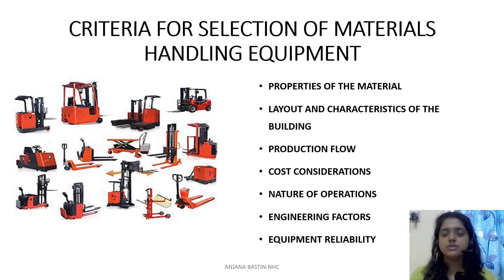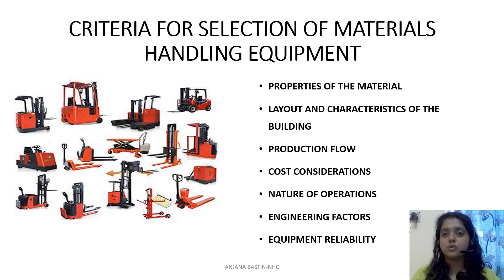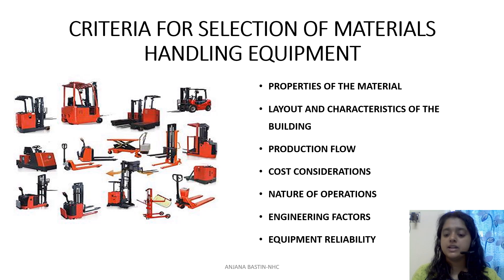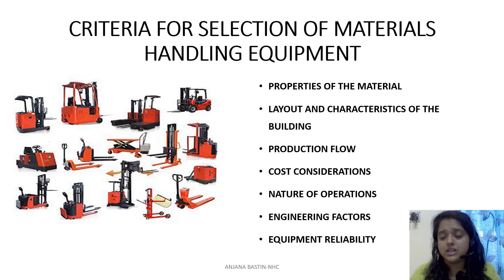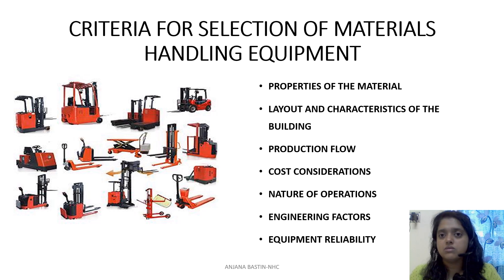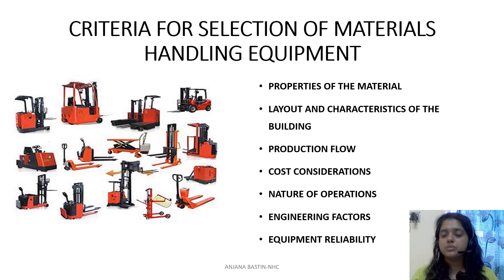Now the criteria for selection of material handling equipment. There are certain criteria to follow to determine the best equipment. The first is properties of the material — it could be solid, liquid, or gas. The way you carry a gaseous material would be through cylinders or containers; a liquid through huge beakers; and solids in carton boxes. Based on the type of raw material, you have to decide which equipment to go for.